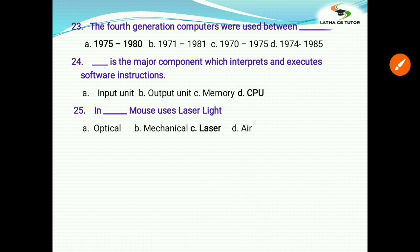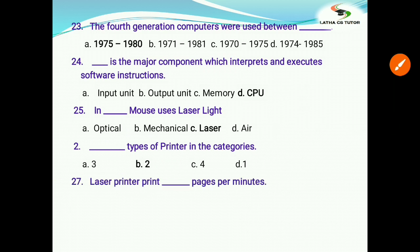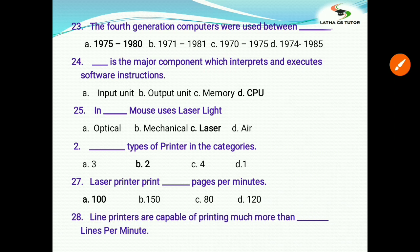Blank types of printer in the categories? There are two types of printers we know: impact printers and non-impact printers are the two types of printers available. Laser printer prints blank pages per minute: a) 100, b) 150, c) 80, d) 120. The answer is 100. Line printers are capable of printing much more than blank lines per minute. A line printer is capable of printing, option B, thousands of lines per minute.